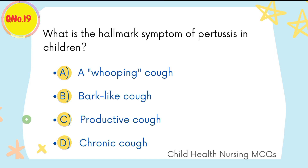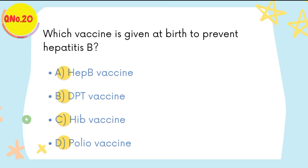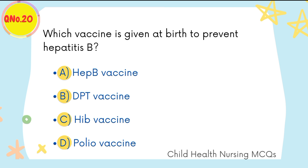A is the right option: whooping cough. Question number twenty: which vaccine is given at birth to prevent hepatitis B? A is the right option: hepatitis B vaccine.